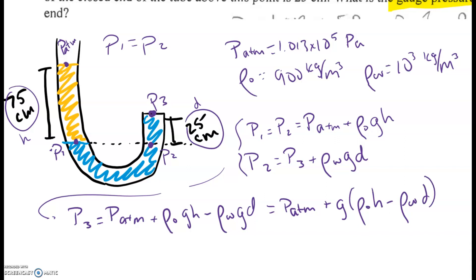I'm going to take one step before I plug and chug here, because remember, we're solving for gauge pressure. So that's going to be pressure 3 minus atmospheric pressure. So then that leads us, we're going to end up getting rid of that atmospheric term. So the pressure we're solving for is going to be simply acceleration due to gravity times the density of oil times our height H minus density of water times our height D.